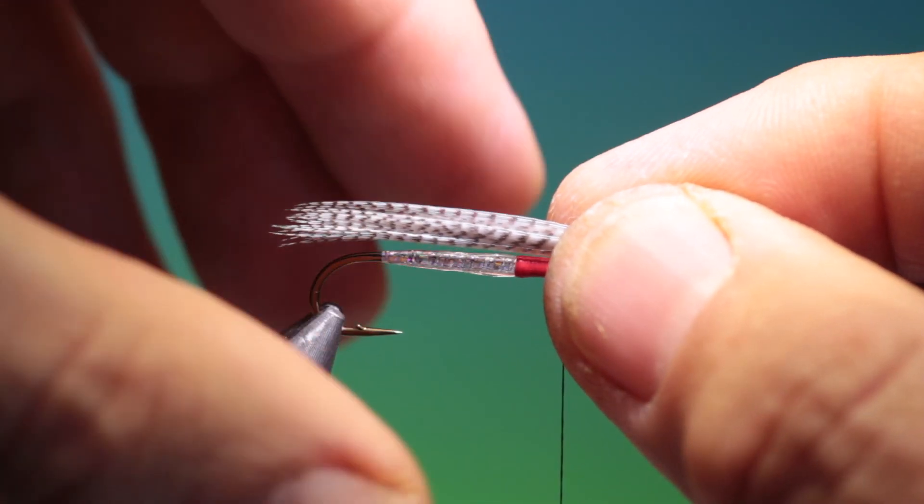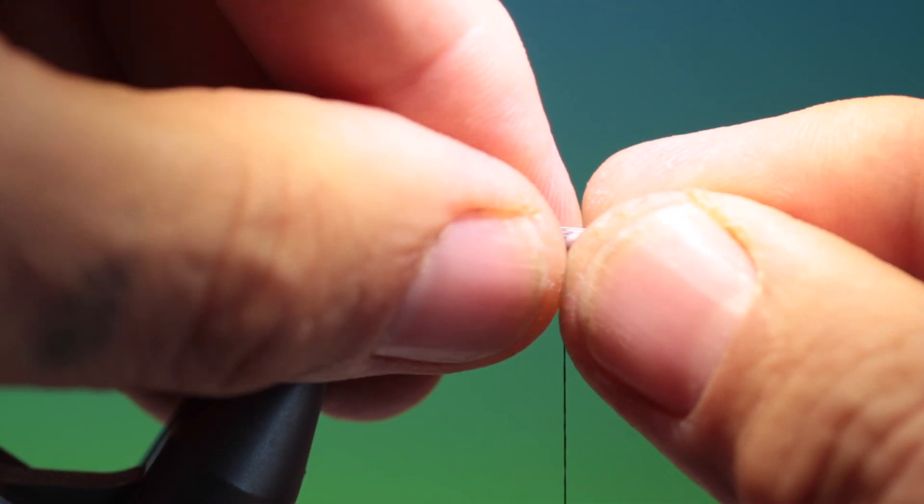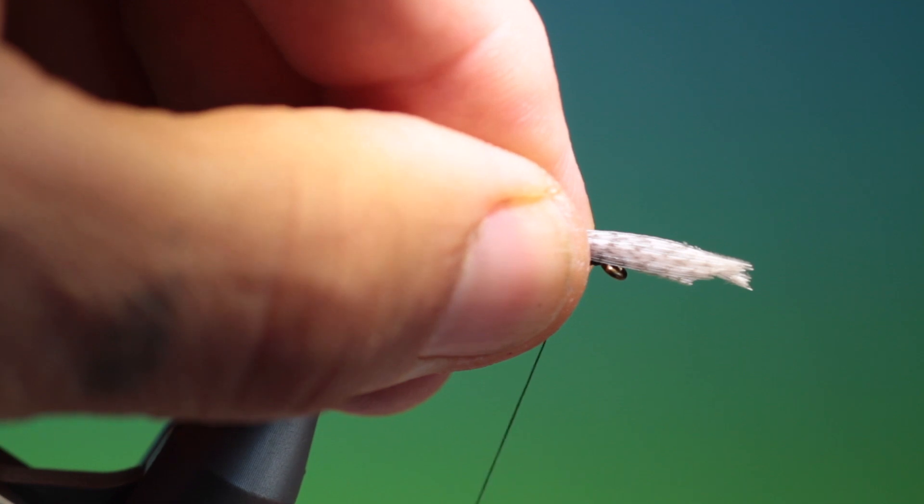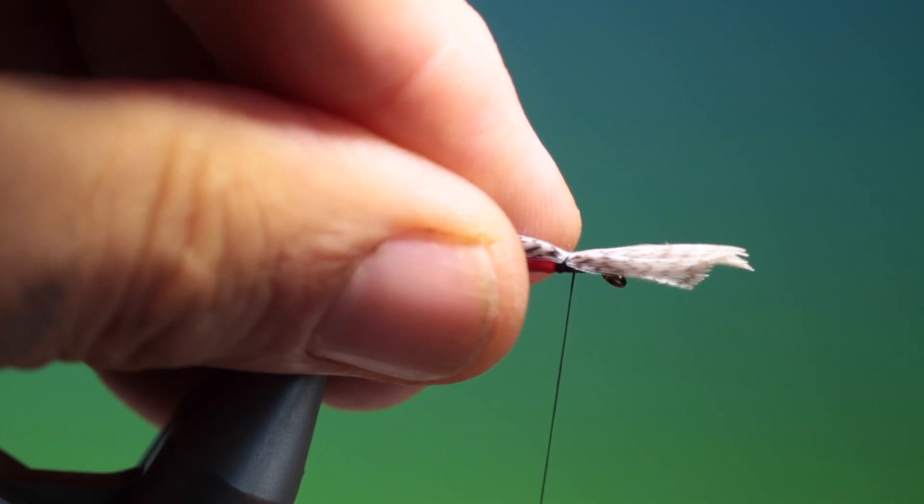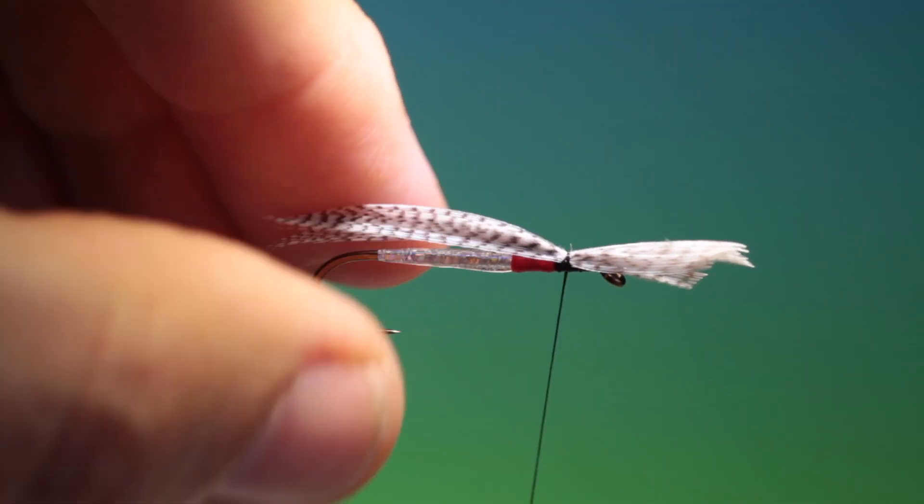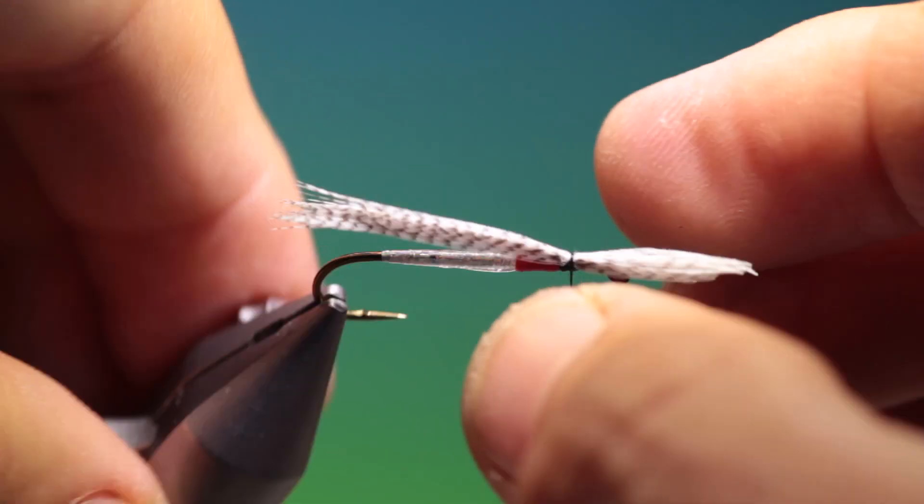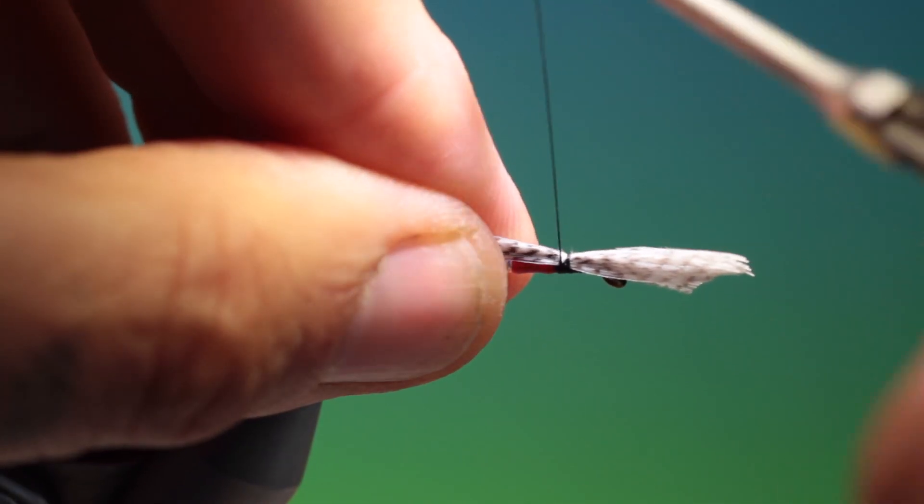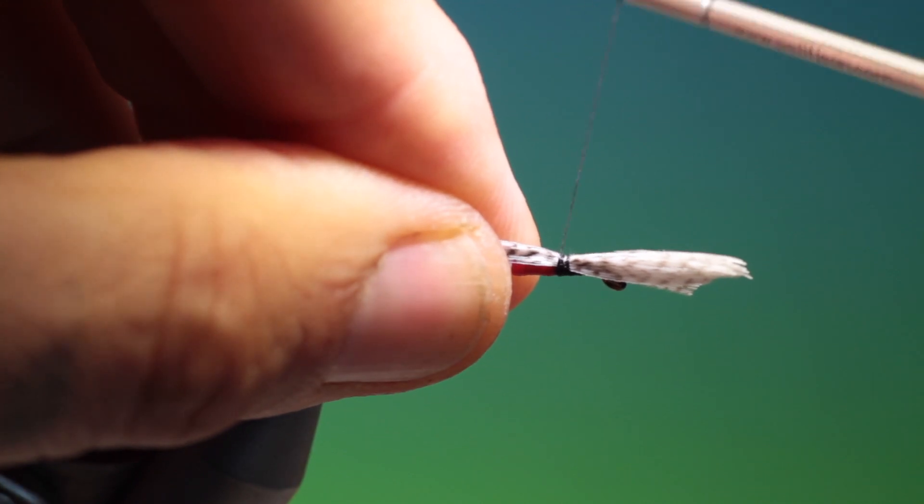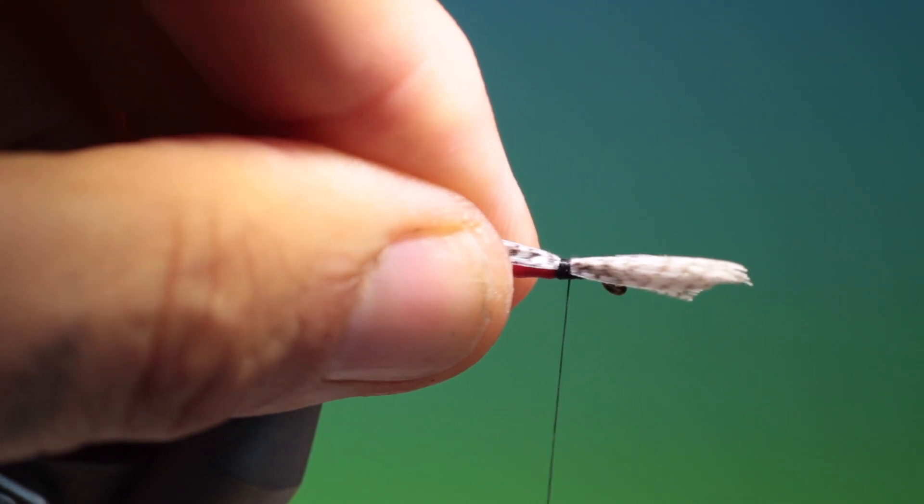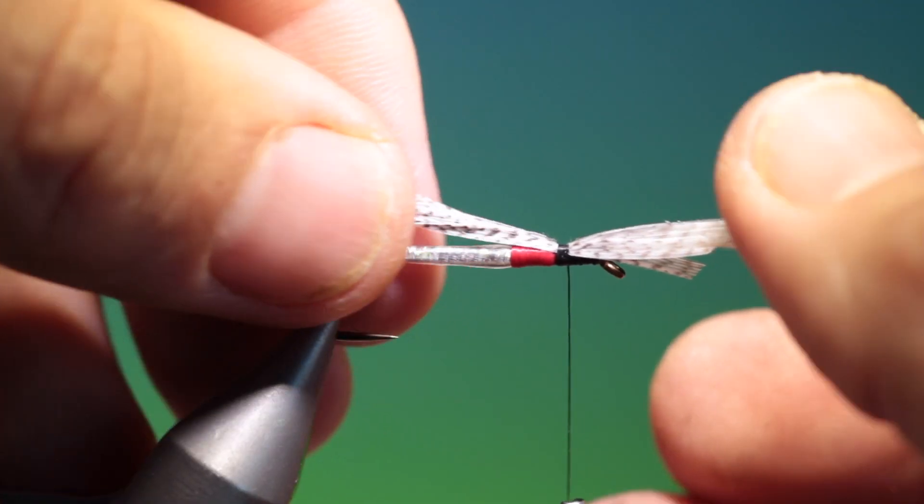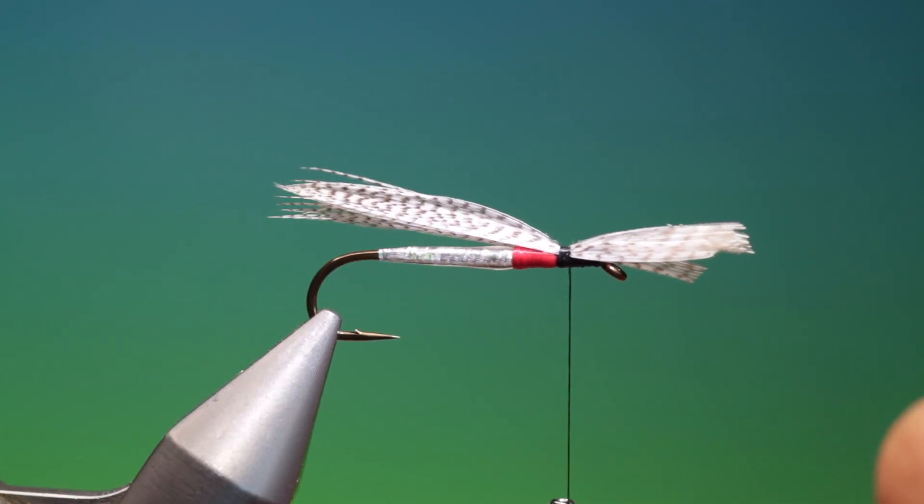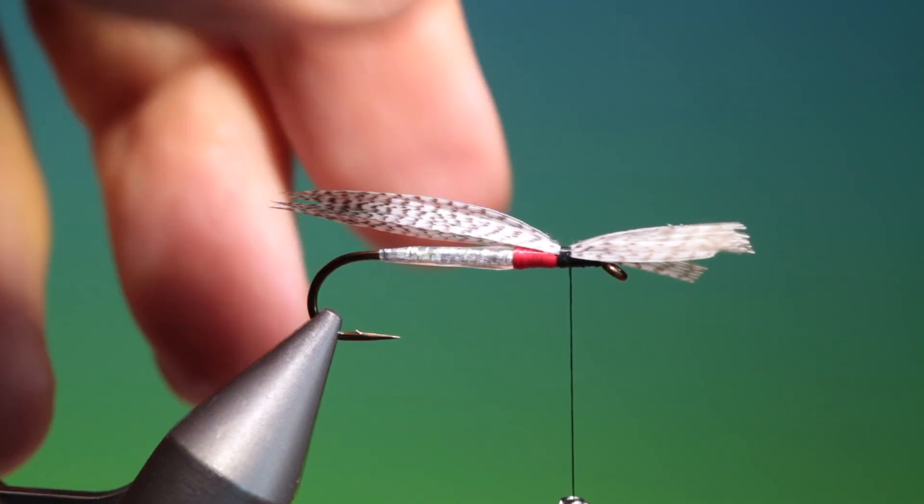That'll do us. And we place this on the hook shank so it's a little longer. Now we want a pinch wrap here. Put it on top of the hook shank. That'll do us. And then we'll just secure it. Two or three turns. Let's wet it down again. Keep it in position.